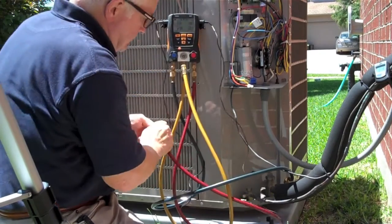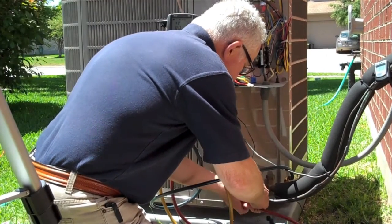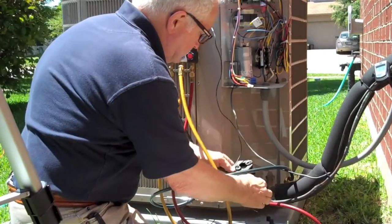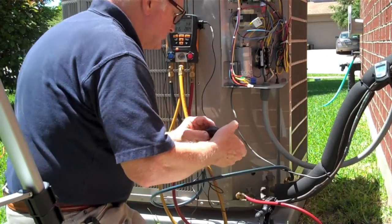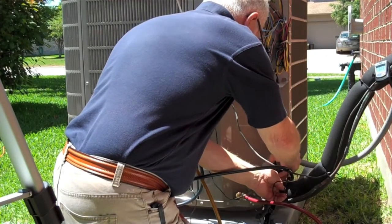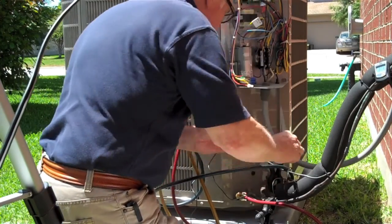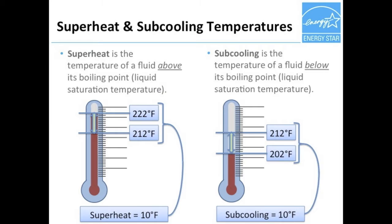Now that the manifold has been purged, Rob can connect the final fitting on the liquid line. Next, Rob connects the two temperature clamps to the suction and liquid lines. The digital manifold he's using will measure both the temperature and pressure of the refrigerant and automatically calculate the saturation, superheat, and subcooling temperatures. Automating this process is a big time saver and can also improve the accuracy of the measurements. Keep in mind that the ENERGY STAR certified homes program only requires that you either measure the superheat or the subcooling temperature depending on the type of metering device in the equipment. However, it's so simple to measure both with the digital manifold that Rob will be recording both sets of results.